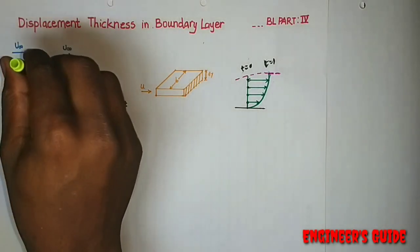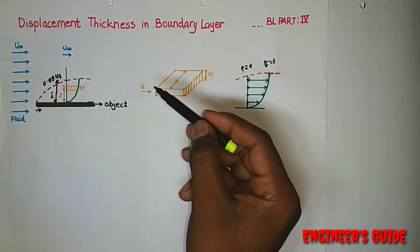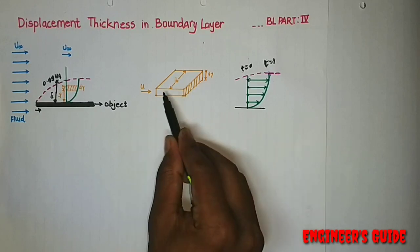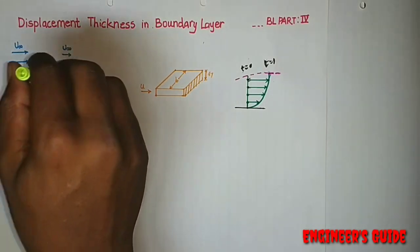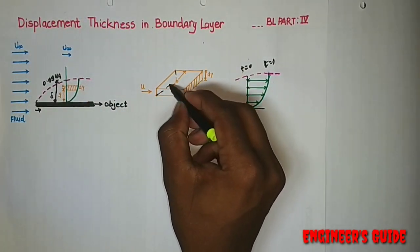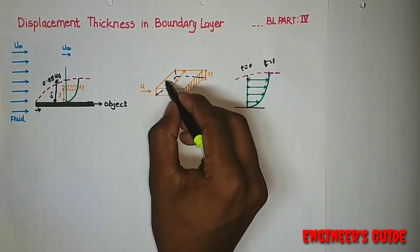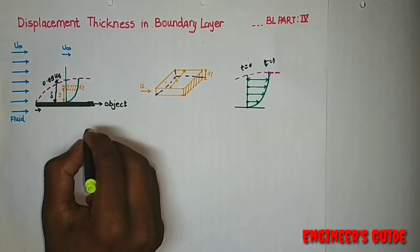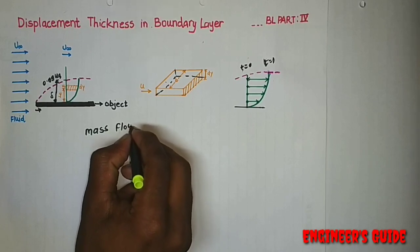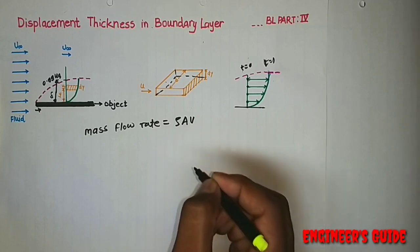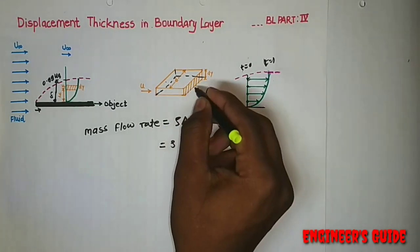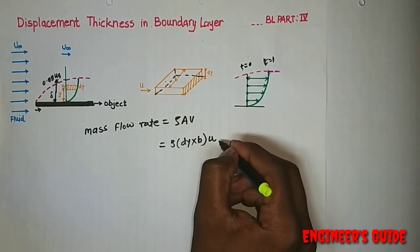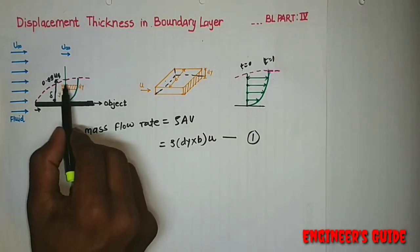I am taking a depth b inside the paper. At this point, the local velocity is u. This is the fluid flow traveling through this area — as depth b is inside, it means through this area. I will calculate the mass flow rate through this area. As we know, mass flow rate is equal to rho times A times phi. For our case, area is dy into b, and phi is the local velocity u.